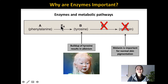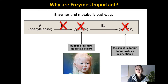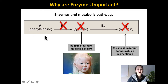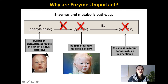What happens if an individual can't produce enzyme A? Well, they won't have a buildup of tyrosine, and they also won't be able to produce melanin. What's going to build up in their body is phenylalanine. If phenylalanine builds up — especially if it builds up in the brain — it can cause many brain defects. This leads to a disorder called PKU, which is the result of phenylalanine building up in the brain.